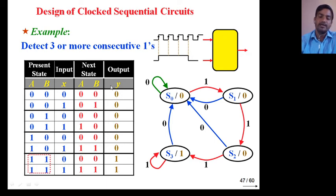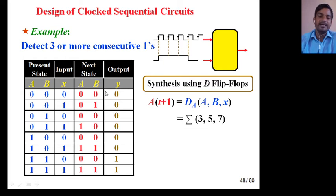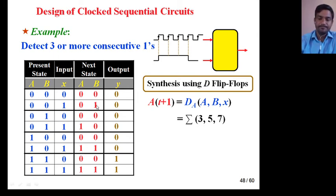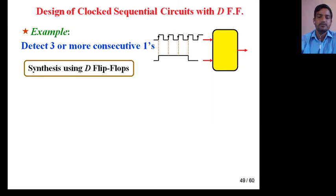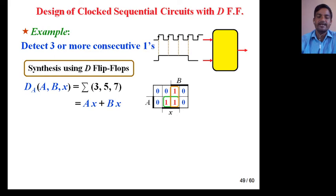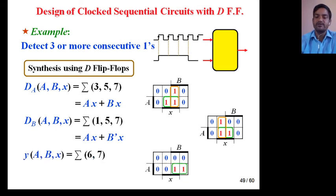Now you will synthesize using D flip-flops. The characteristic equation is: A(t+1) = DA. DA corresponds to minterms 3, 5, 7 — sigma(3,5,7). Similarly, B(t+1) = DB, and DB corresponds to minterms 1, 5, 7. Output Y corresponds to minterms 6, 7 — sigma(6,7). Solving by K-map: DA gives Ax + Bx; DB gives Ax + B'x; and Y gives AB.